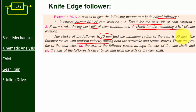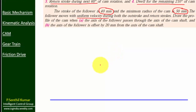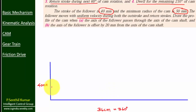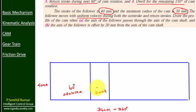Let us draw a displacement diagram first. Draw a horizontal line of length 36 centimeters — here 360 degrees equals 36 centimeters. Draw a vertical line of length 40 mm, which indicates stroke length. Draw the remaining sides of the rectangle. Mark out stroke as 60 degrees, which means 6 centimeters. Mark dwell as 3 centimeters. Out stroke as 6 centimeters.